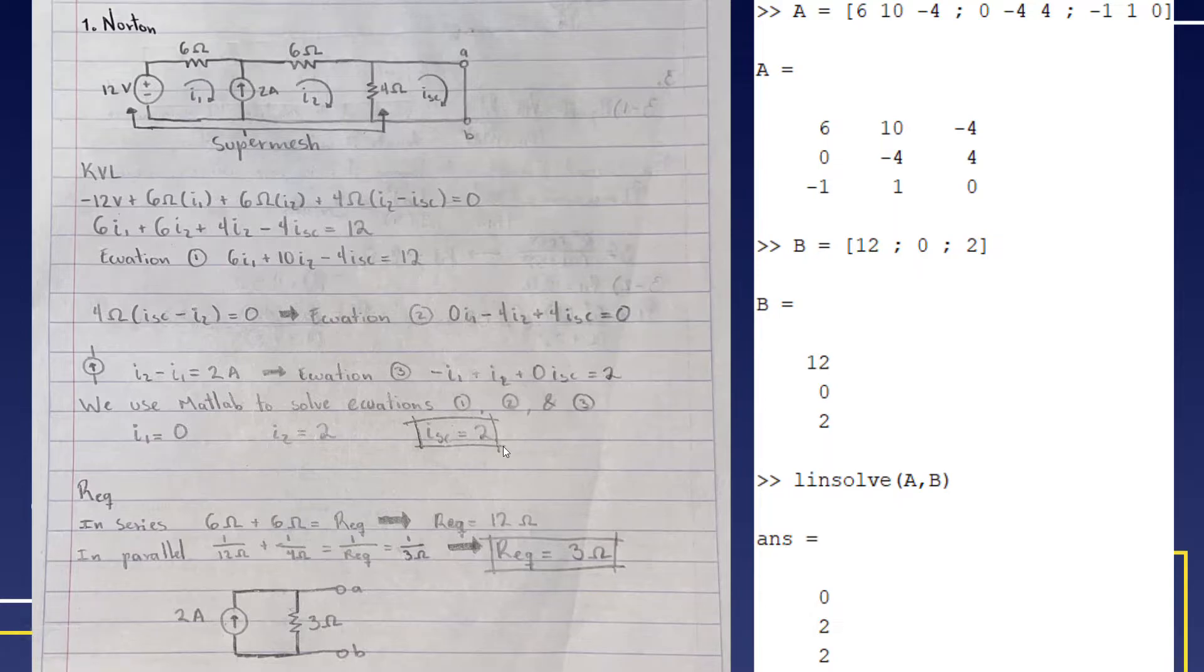When we have the three equations, our short circuit current will be one of them. If we solve that, we solved it in MATLAB and it gave us that ISC will be 2 amperes.